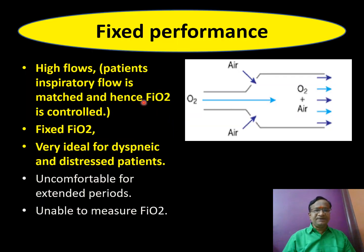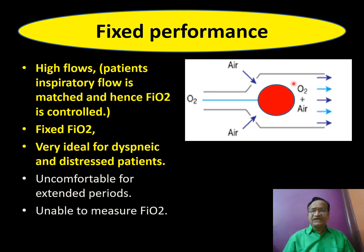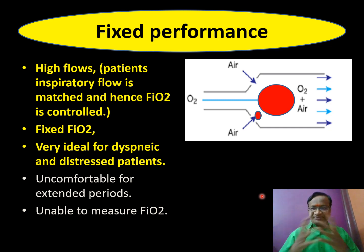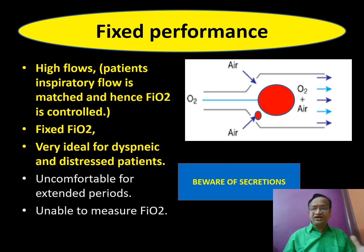High flow systems match the patient's inspiratory flow, providing a controlled and fixed FIO2 — ideal for dyspneic and distressed patients, though uncomfortable for extended use and FIO2 cannot be directly measured. Beware of secretions obstructing the jet orifice or tubing: if a patient on 40% Venturi slowly deteriorates, obstruction by secretions should be suspected.